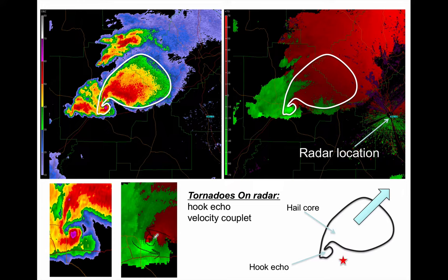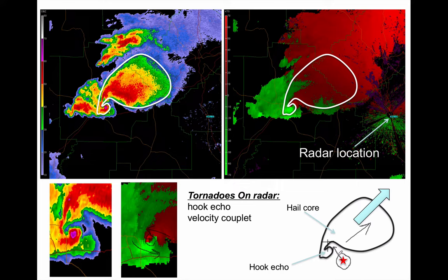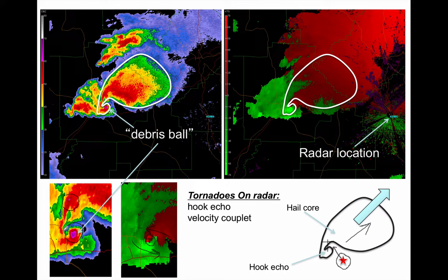If you'd like to safely observe a supercell and look into the hook echo to see the tornado, you want to be to the southeast of the storm. You can view right inside the hook where the tornado is located — the storm is moving away from you and you can see safely inside. When storm chasing, the rule is: get south and get east. That's the safest place to be. That high reflectivity blob is not hail — it's a debris ball. The tornado picked up enough debris and threw it high enough that the radar detected it, not hail. Whenever we see debris balls on radar, we know a lot of damage is being done.